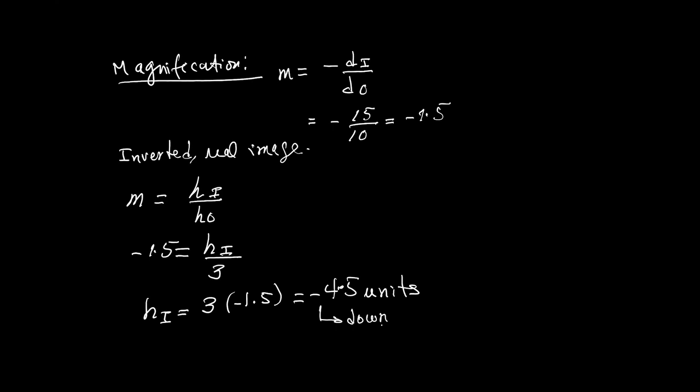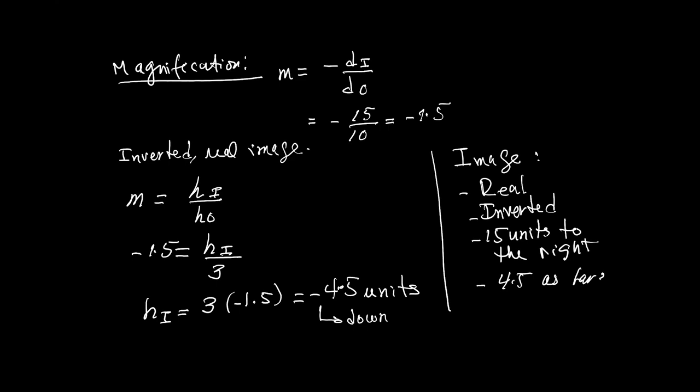So, the image, if we want to summarize things. Real. Inverted. 15 units to the right of the lens. And 1.5 times as large as the object, which is basically 4.5 units.